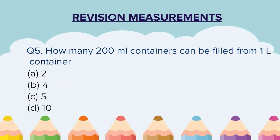Question 5: How many 200 ml containers can be filled from a 1-liter container? A) 2, B) 4, C) 5, D) 10.